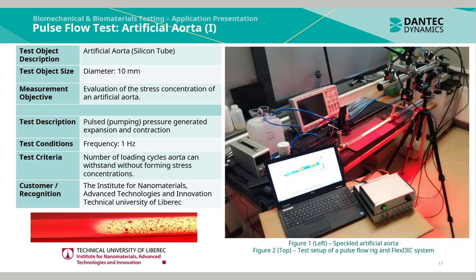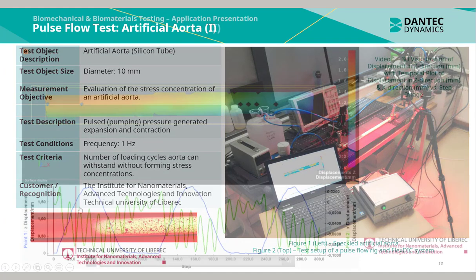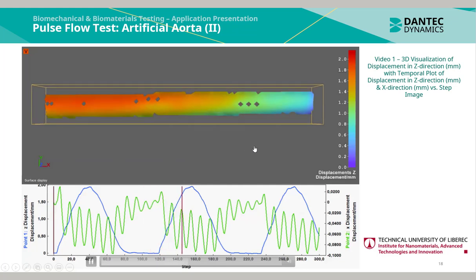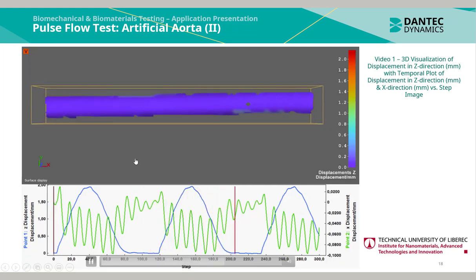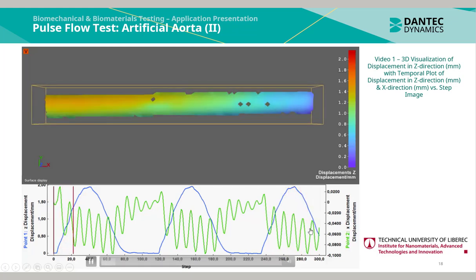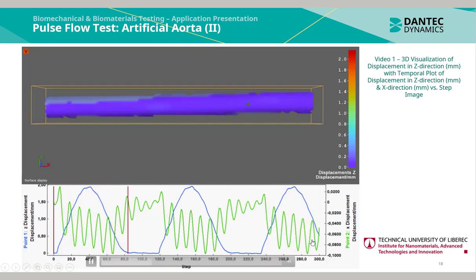The test criteria is to assess the number of loading cycles the artificial aorta can withstand without forming stress concentrations. On the right we see a test setup of the artificial aorta and a FlexDIC system. Here is a video of the 3D visualization of the displacement in the Z direction, with a temporal plot of the displacement in the Z and X directions in millimeters versus the step image.